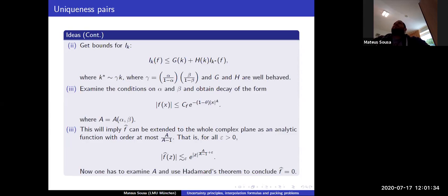I should mention that Nazarov and Sodin announced — in oral communication — that they completely solved this uniqueness question, proving that the entire lower triangle alpha + beta < 1 works and that in the upper triangle there always exists a nonzero function vanishing on both sequences. Their techniques are somewhat similar to ours but implemented in a much smarter way, using average information rather than pointwise, which allows more flexibility.